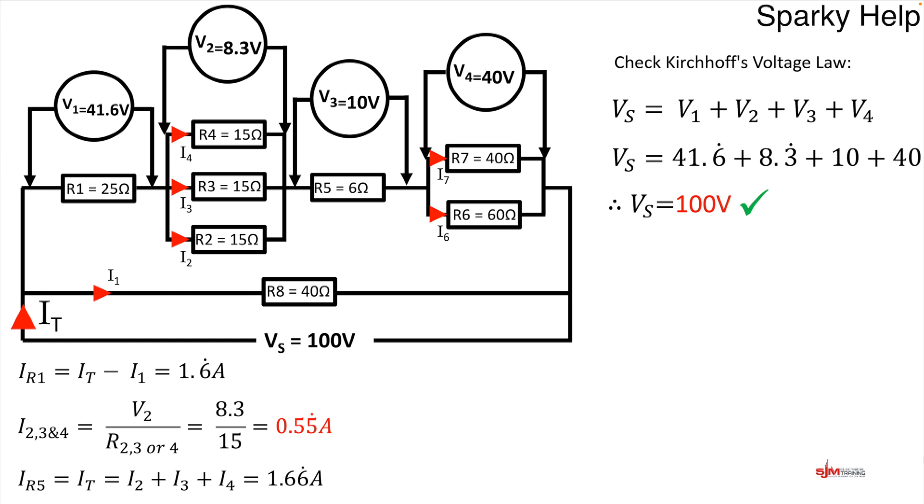And all of that current will go into the last two and split proportionally depending on the value of those resistors. But to find those currents, to find I6, it is V divided by R, Ohm's law. But it's the voltage across that resistor divided by the resistance of that resistor. So in this case 40 divided by 60 gives us 0.6 of an amp. And therefore the top one is the same process again, 40 divided by 40 gives us 1. Which means if you add those two up you get back to 1.6. If you didn't come back to 1.6 you know you've gone wrong. So I hope that has been useful.